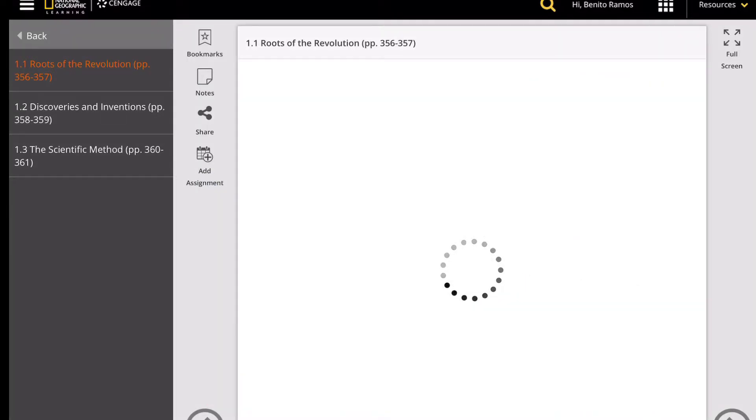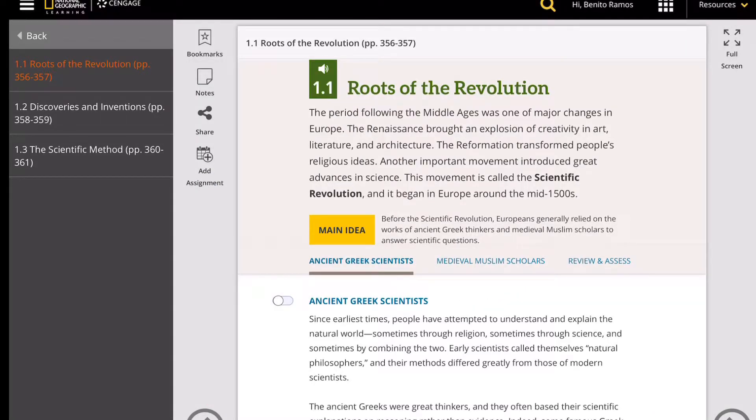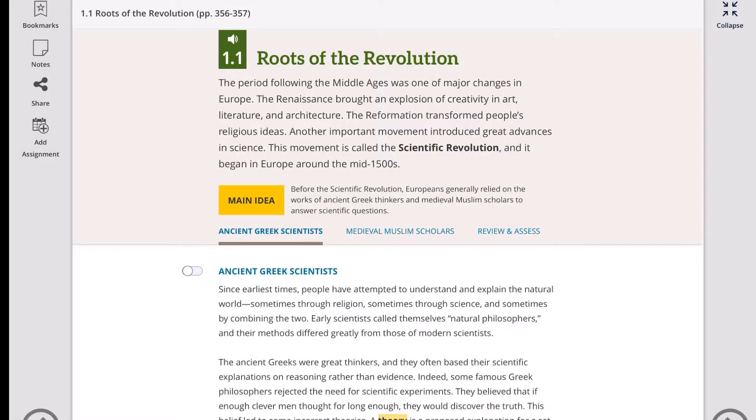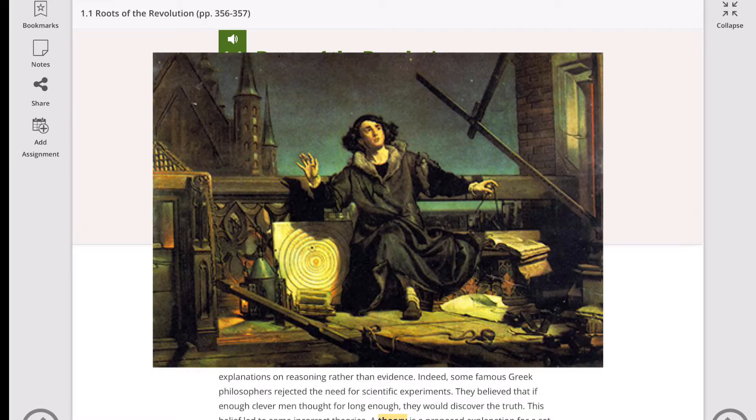The period following the Middle Ages was one of major changes in Europe. The Renaissance brought an explosion of creativity in art, literature, and architecture. The Reformation transformed people's religious ideas and created nation-states like the United States. Another important movement introduced great advances in science. This movement is called the Scientific Revolution, and it began in Europe around the mid-1500s.